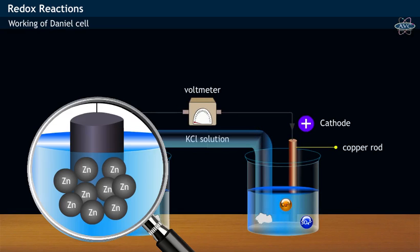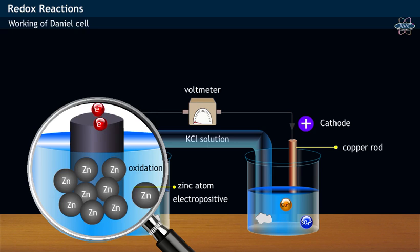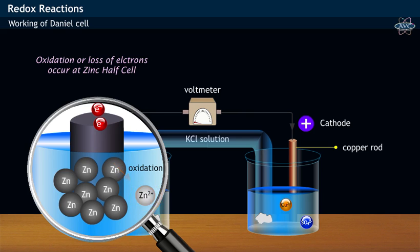At zinc electrode, the zinc atoms being highly electropositive, lose two electrons, that is undergo oxidation, and thereby form zinc ions shown as Zn2+, which enter into the solution. That is, oxidation reaction occurs at zinc half cell.